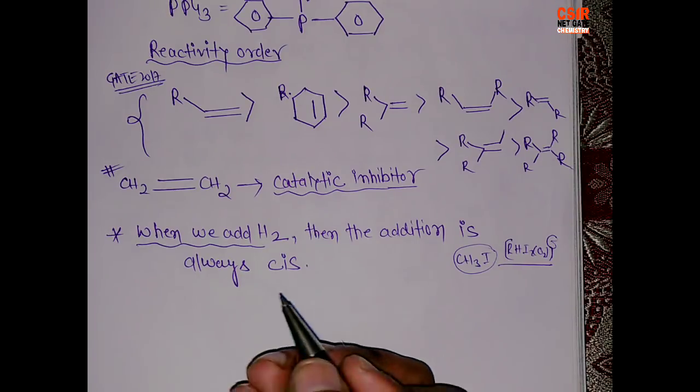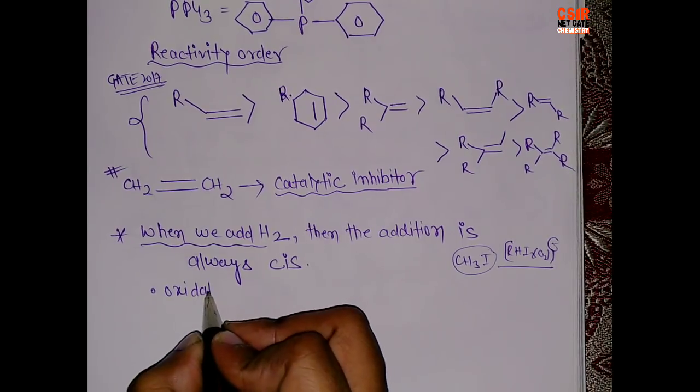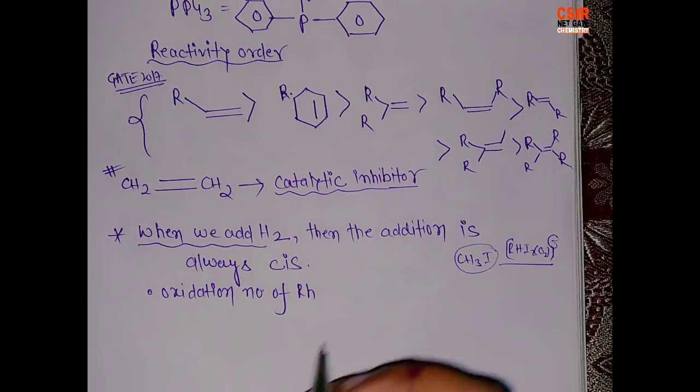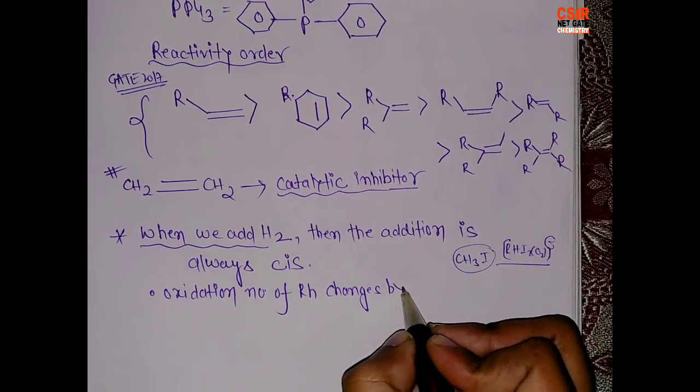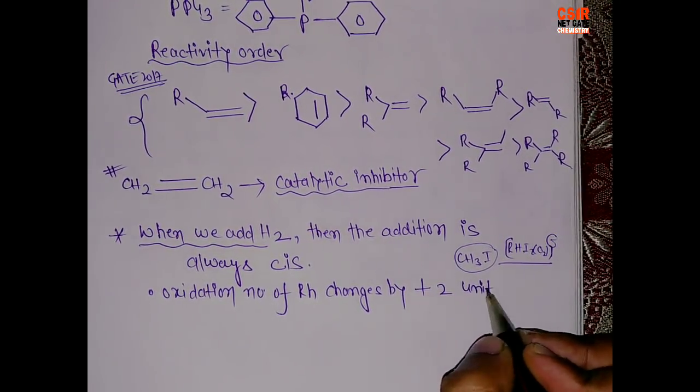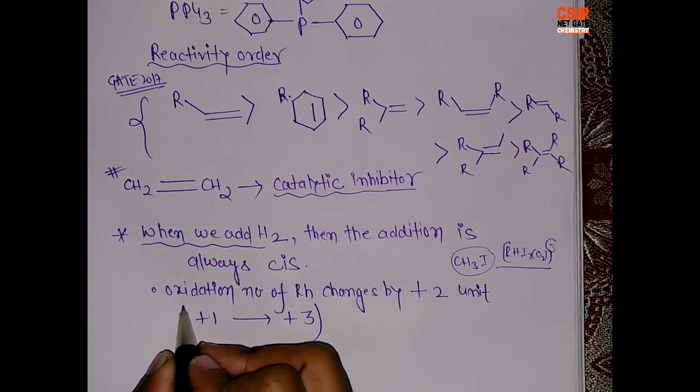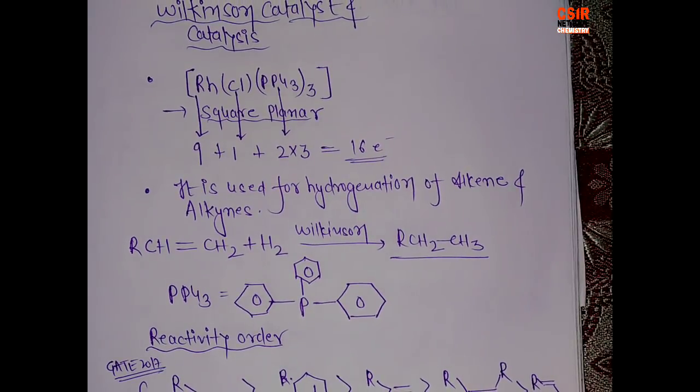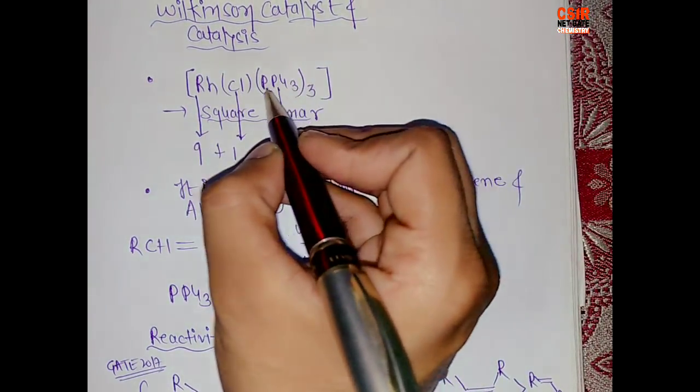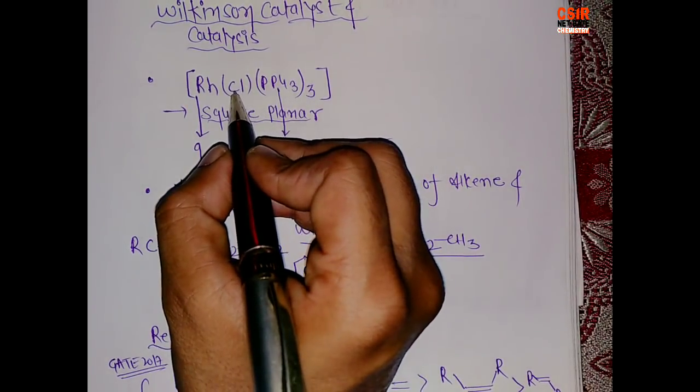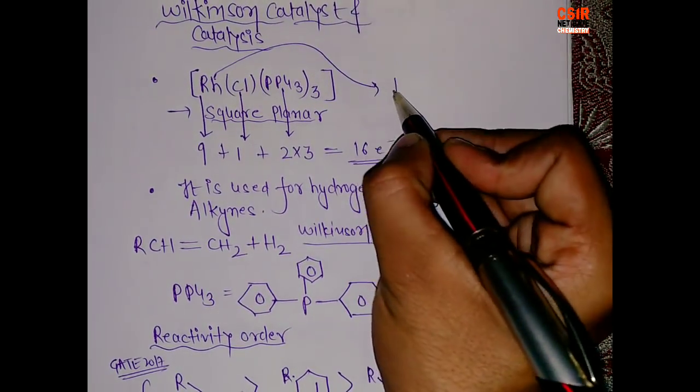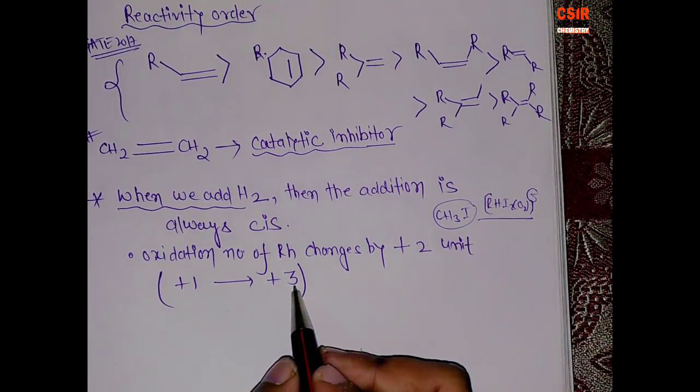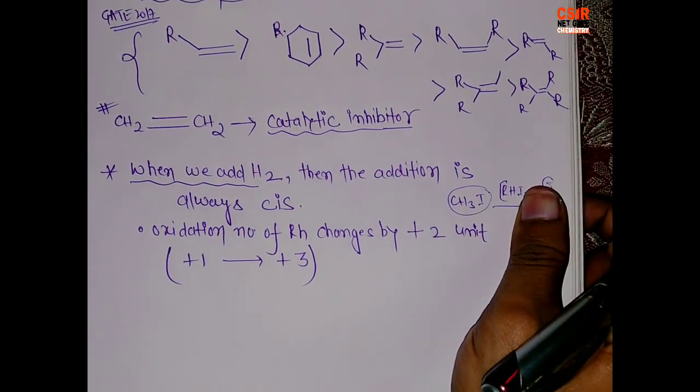So it is always cis, and we know that it is an oxidative addition process. So the oxidation number changes by 2 units. Oxidation number of rhodium atom in the Wilkinson catalyst changes by plus 2 units. That means from plus 1 to plus 3. As we calculated - oh sorry, I forgot to tell you what is the oxidation state of rhodium in this Wilkinson catalyst. This is a neutral ligand, phosphine. We have only charged ligand as Chlorine. So it has a plus 1 oxidation state. So from plus 1, we have plus 3. One from Chlorine and two from Hydrogen.